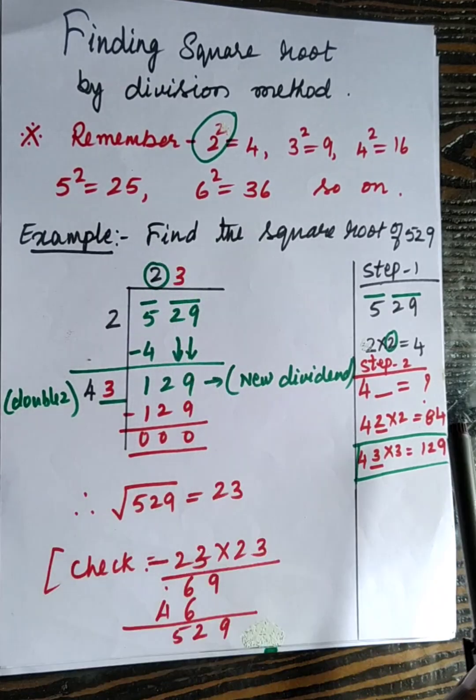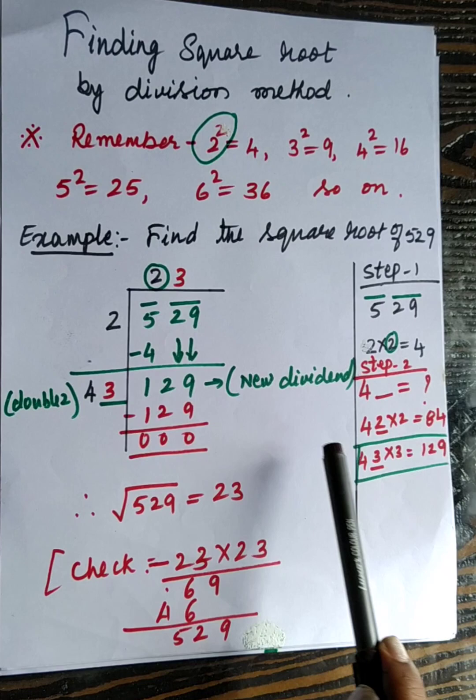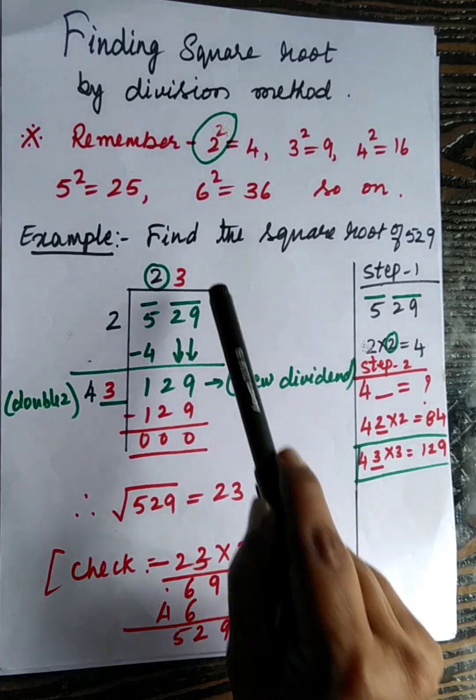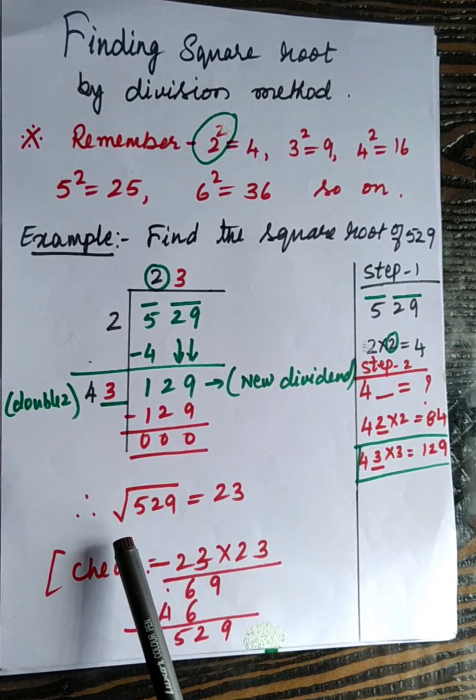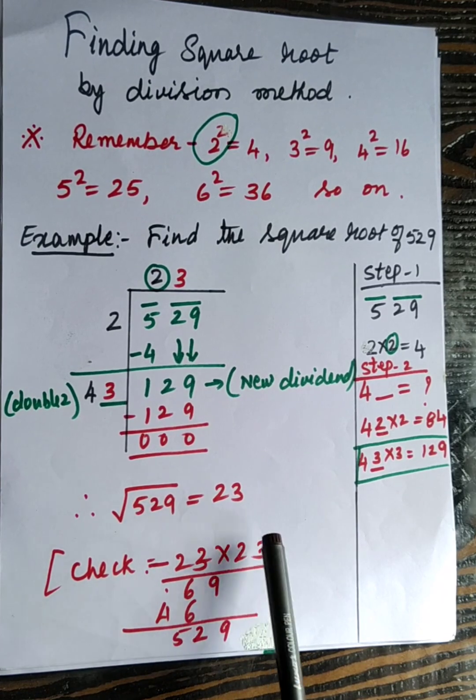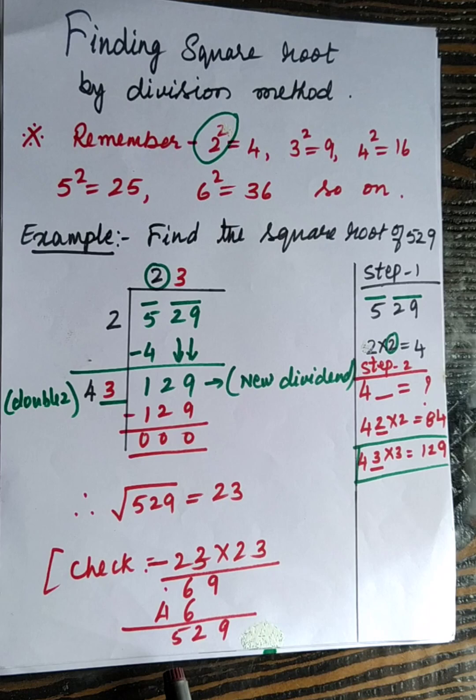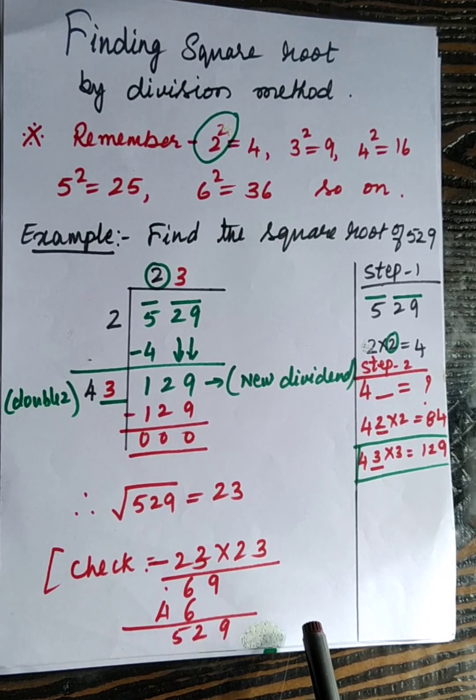Now place this 3 over here. 43 into 3 is 129. Therefore this is the quotient which is the square root of 529. You can check your answer by multiplying this one. 23 into 23 is 529. So our answer is correct.